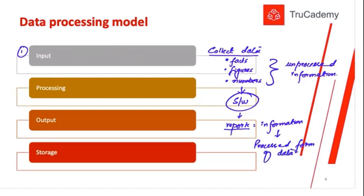Data, also known as reports or information, follows this cycle: first we collect the input data, second we process the data, third we produce the reports, and last we need storage. Whatever data we input, whatever reports we produce, whatever processing we do — for everything we need storage. There are lots of different methods to store or process the data.